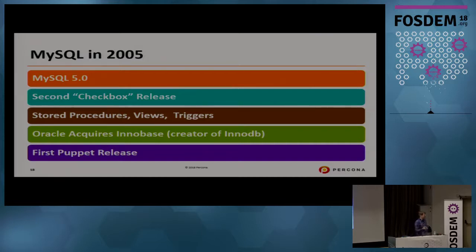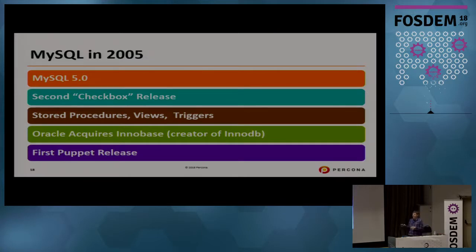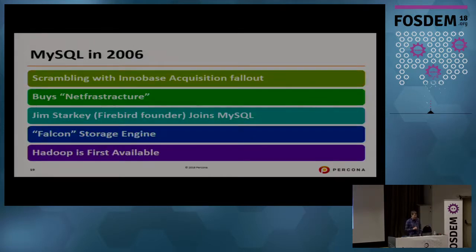What I think is very impactful for MySQL outside of this community is that Puppet was released — the first of a new generation of automation frameworks. Think Puppet, Chef, Ansible — they really started to ingrain people in the new thinking: you should not be manually managing your databases because that doesn't scale. You should automate everything. That wasn't quite commonplace in 2005, but it was the start of those practices.